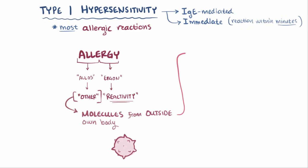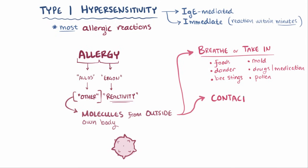And these are specific molecules from things you might breathe or take in, like foods, animal dander, bee stings, mold, drugs or medications, and pollen. But you can also mount an allergic reaction to things you come in contact with on your skin, like latex, lotions, and soaps.